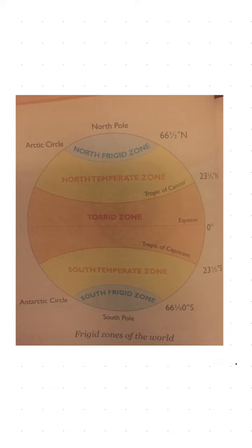Now you can see the diagram I have shared with you all. There is a north pole and south pole. We have shown the north frigid zone, then the north temperate zone, then the torrid zone, south temperate zone, and south frigid zone. The Antarctic Circle is there — this is a diagram of the frigid zones of the world.